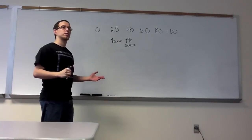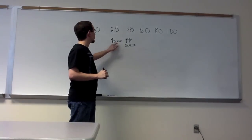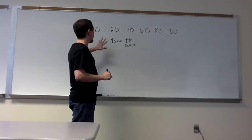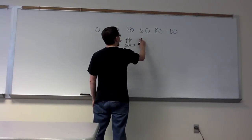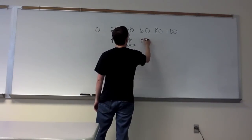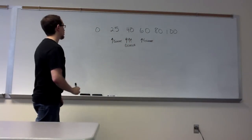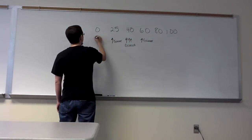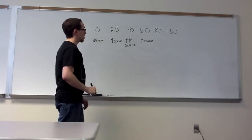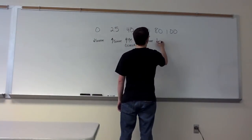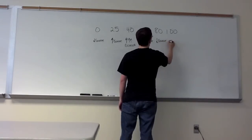At 60°C we also saw somewhat high glucose levels. At 0°C, people saw some glucose but pretty low levels. While most people at 80°C and 100°C saw either low glucose or no glucose at all.